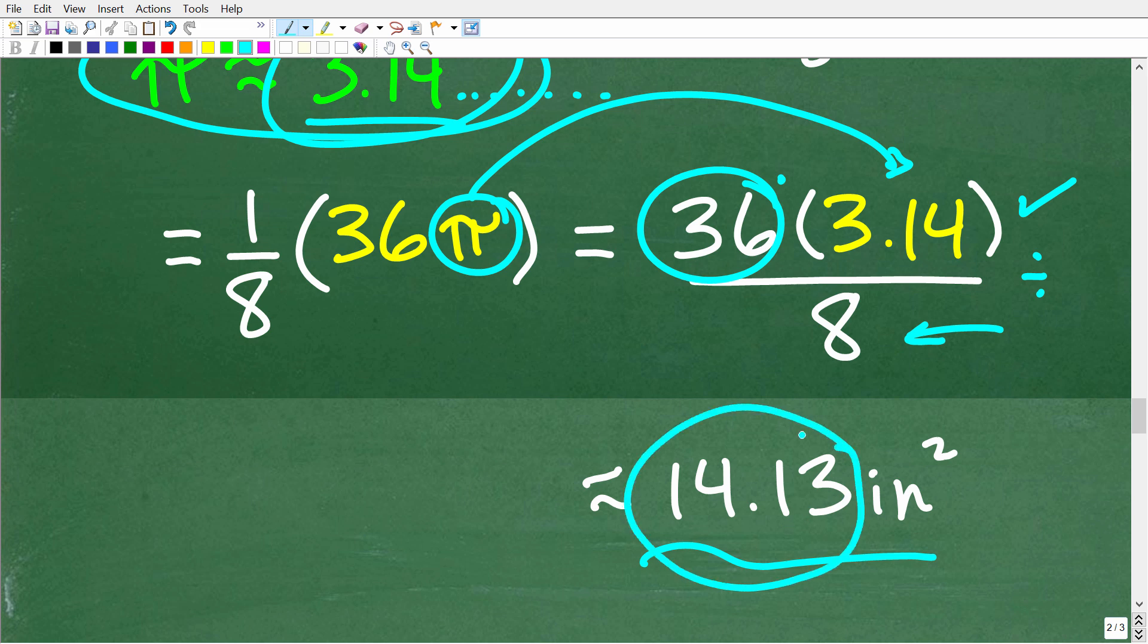But remember, we have to think about the units of measure here. We're being asked about the area of one of these pizza slices and the width of the pizza was given to us in inches. So the area is going to be in inches squared. So the correct answer is approximately 14.13 inches squared.